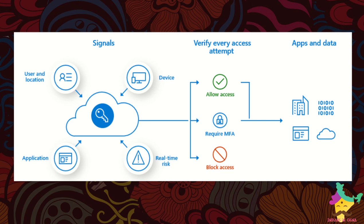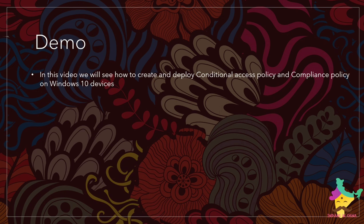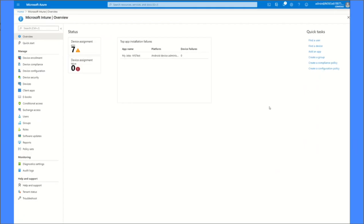अब आगे बढ़ते हैं next lane पे — जो है demo। इस demo में हम देखेंगे कि किस तरह से हम deploy करते हैं conditional access policy, और हम compliance policy के साथ इसको जोड़ते हैं — कैसे हम device को compliant कर सकते हैं। जैसे कि last videos में हमने देखा था device compliance, हम एक general overview किया था। इस video के अंदर हम compliance policy बनाएंगे।